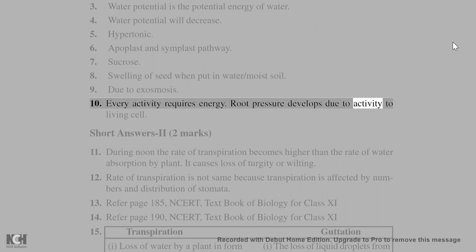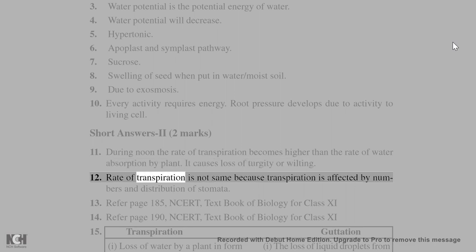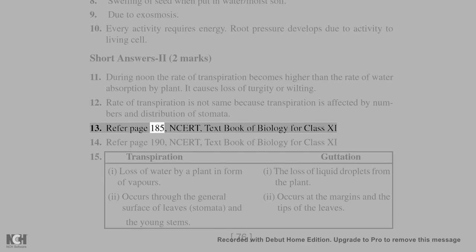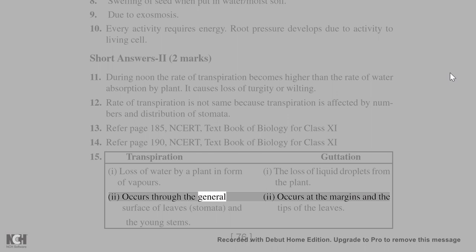Short answers, 2 marks. 11. During noon the rate of transpiration becomes higher than the rate of water absorption by plant. It causes loss of turgidity or wilting. 12. Rate of transpiration is not same because transpiration is affected by numbers and distribution of stomata. 13. Refer page 185. 14. Refer. 15. Transpiration vs guttation. 1. Loss of water by a plant in form. 1. The loss of liquid droplets from vapors. The plant. 2. Occurs through the general. 2. Occurs at the margins and the surface of leaves, stomata, and tips of the leaves. The young stems.